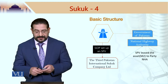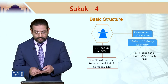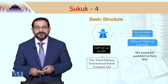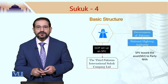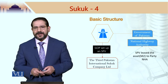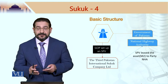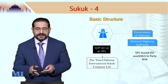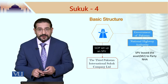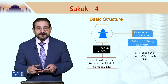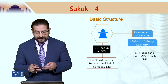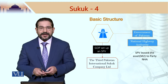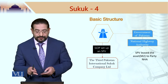The government of Pakistan owns the motorway M2. In order to structure the deal, an SPV was set up. This SPV was actually named the Third Pakistan International Sukuk Company Limited. In previous modules I mentioned that the SPV is normally domiciled in an offshore jurisdiction, but in this case Pakistan decided to set up this company onshore. So this was not an offshore structure. The government of Pakistan set up this SPV and named it the Third Pakistan International Sukuk Company Limited.